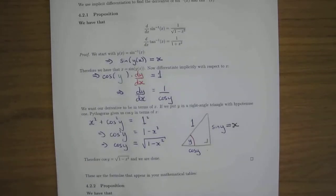Okay, so this short video is just to show that the derivative of inverse sine is one over the square root of one minus x squared. The derivative of inverse tan is similar, so basically the way it works is...